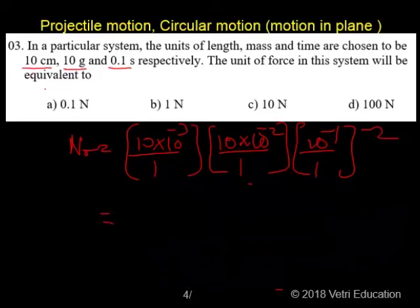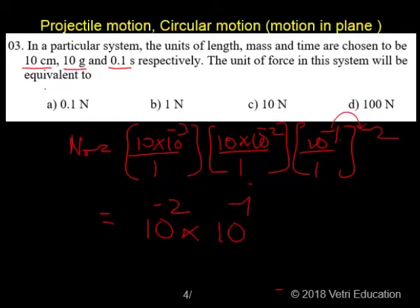So, 10 times 10 to the minus 3, 10 to the minus 2, and here 10 to the minus 1. Minus 1 times minus 2 is going to be plus 2, equal to 10 to the plus 2.